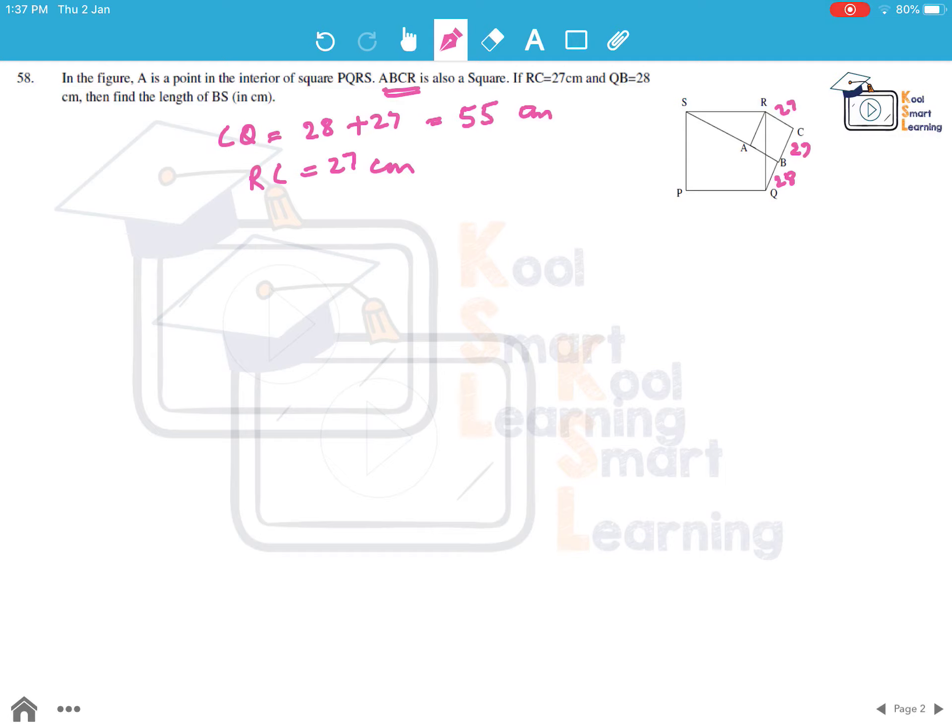Now triangle CRQ and triangle ARS. So we have this triangle and we have this triangle. These two, if we compare, we know that angle A is equal to angle C equal to 90 degrees.